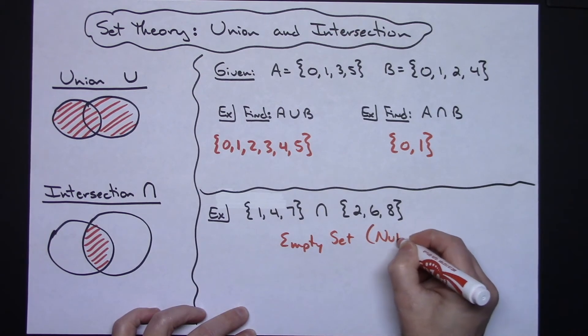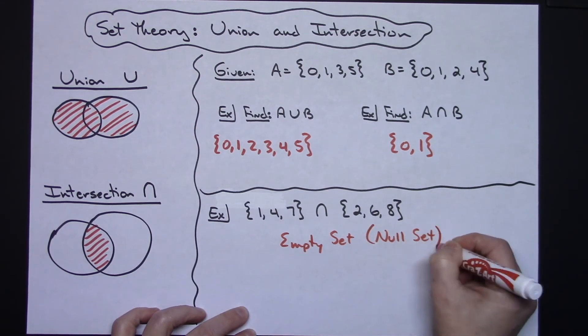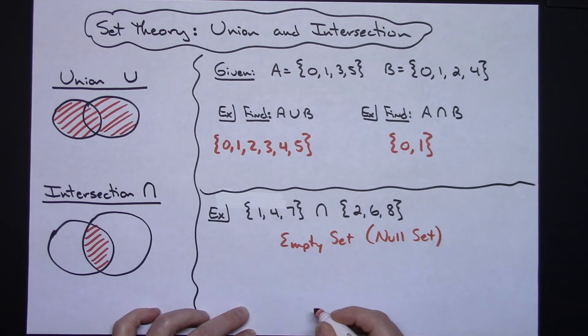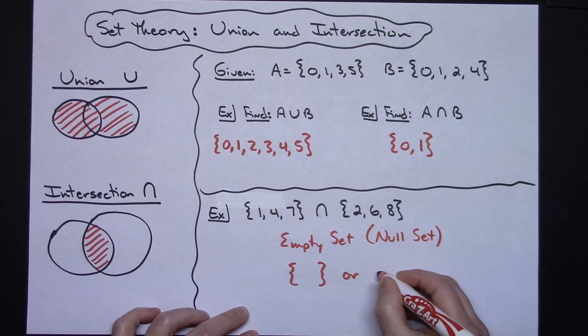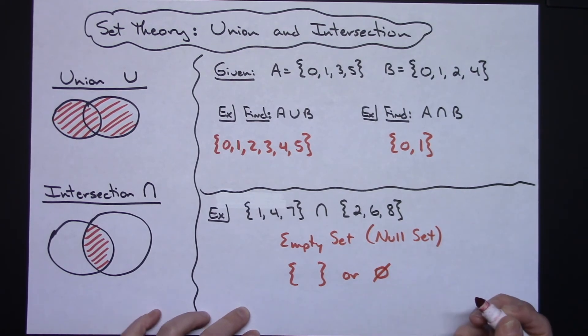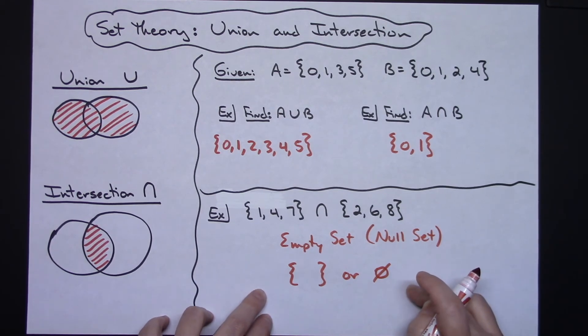Empty set is the definition of what that would be called. It could also be called a null set as well. And there are two mathematical symbols that you could write as your answer: one of them would literally be set brackets with nothing inside of it, showing an empty set right there, or the common notation for an empty set would be a zero with a line through it. So two different ways to represent the empty set when the intersection does not contain any elements in common.